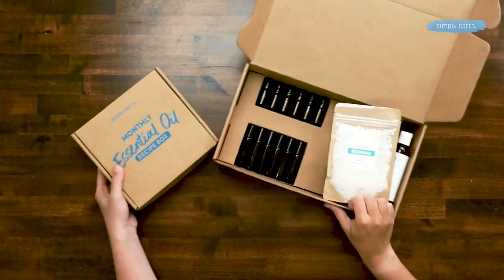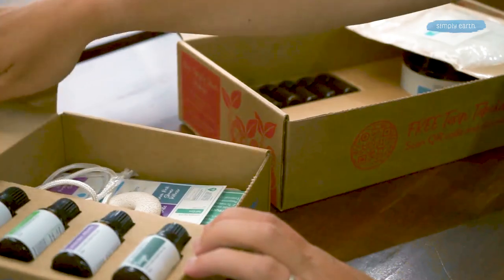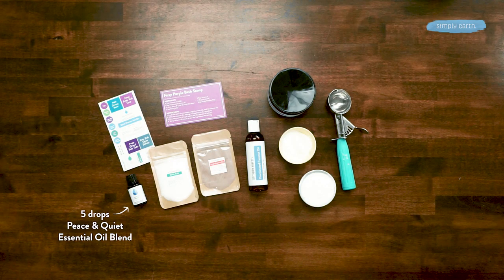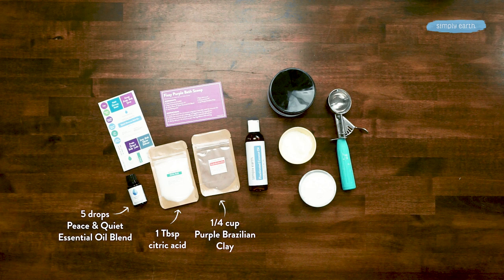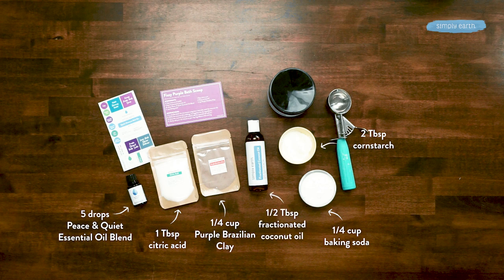From your recipe box, grab your recipe card, peace and quiet essential oil blend, citric acid, and purple Brazilian clay. And from your kitchen, you're going to want to grab some baking soda and cornstarch, and some fractionated coconut oil and solid coconut oil from your big bonus box. And then you're ready to go.